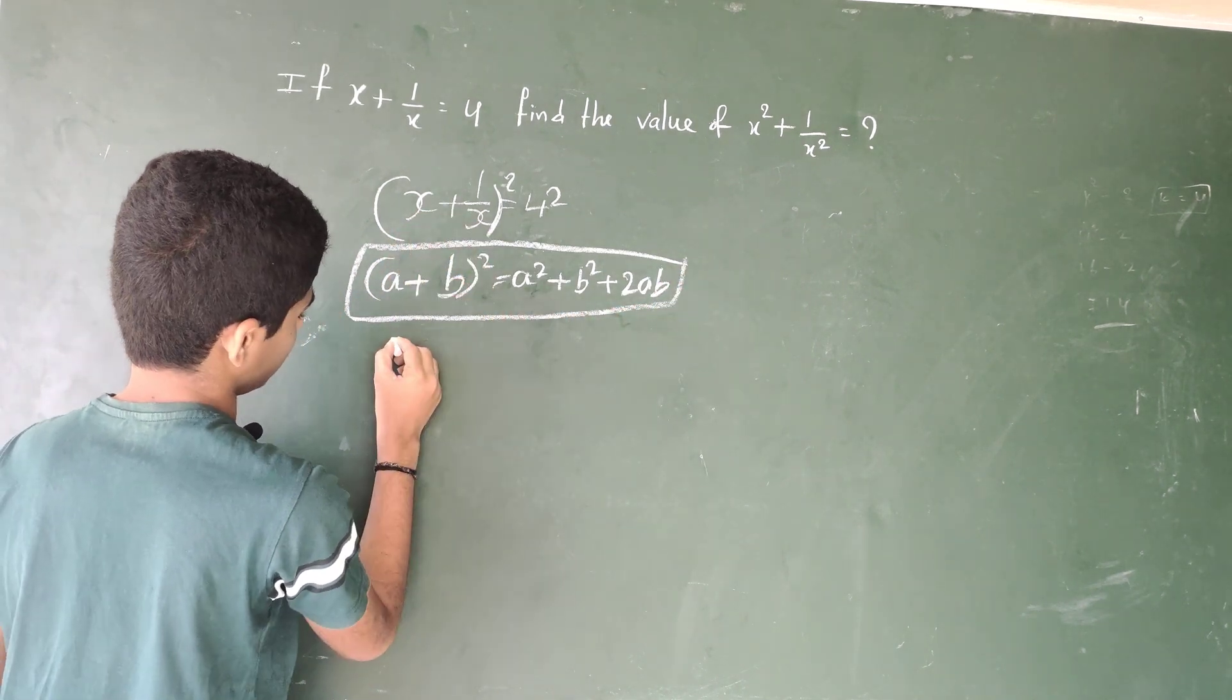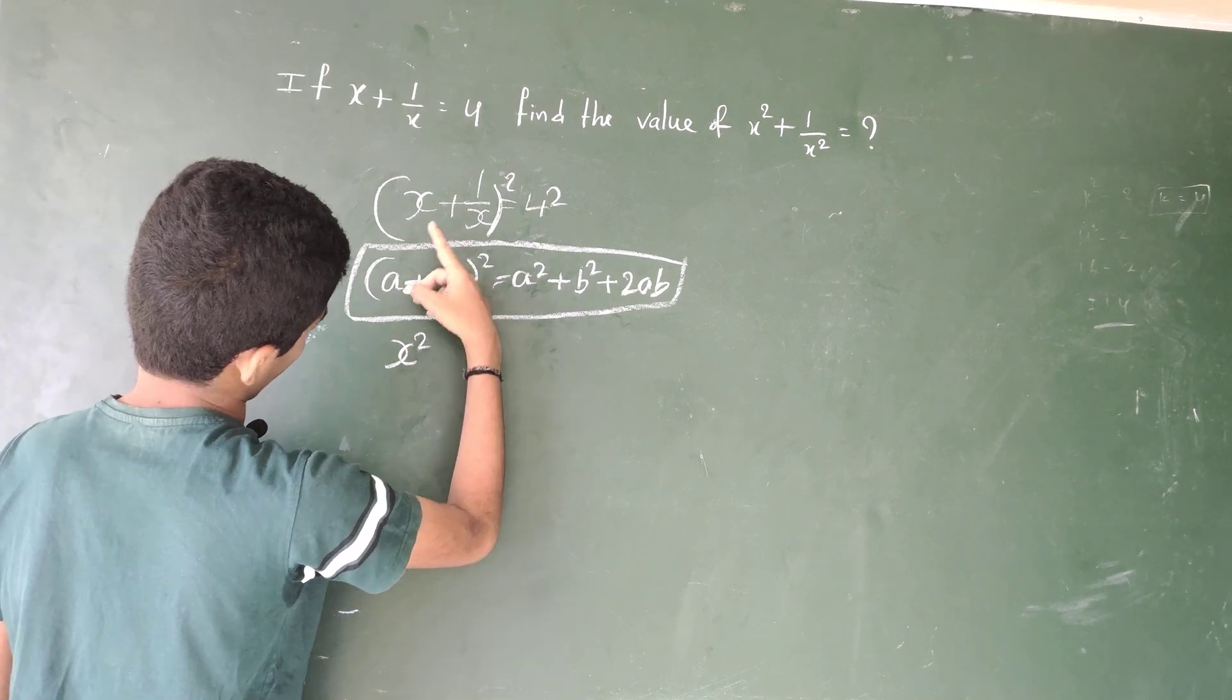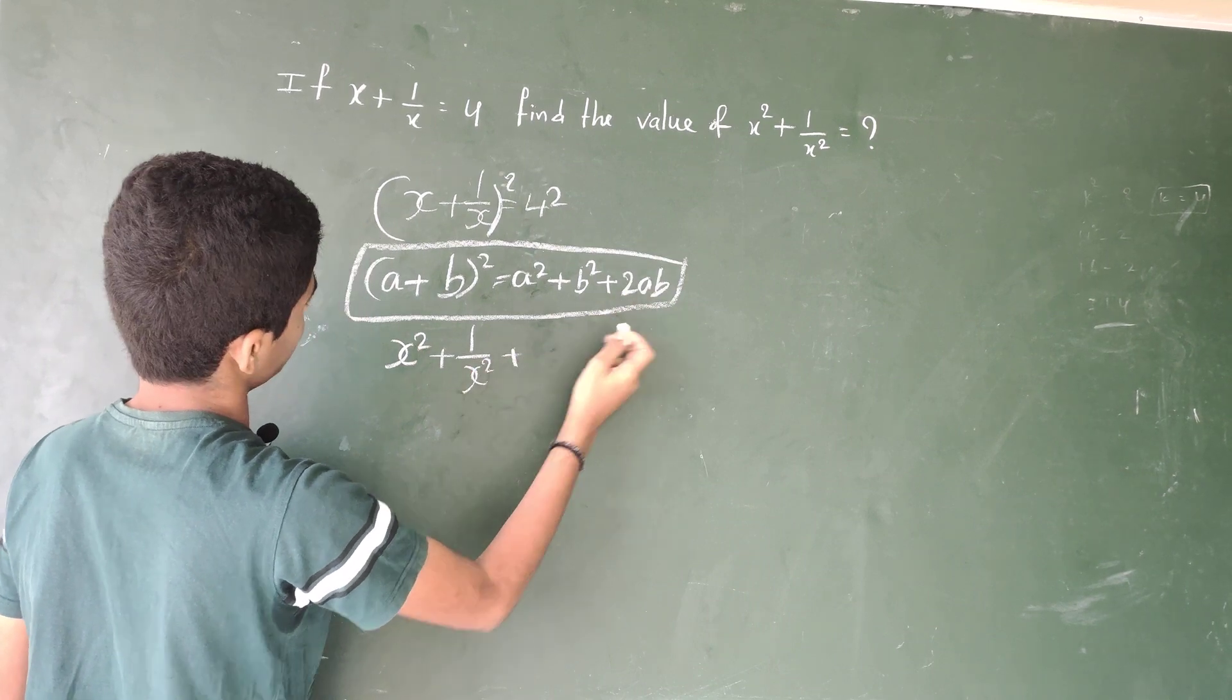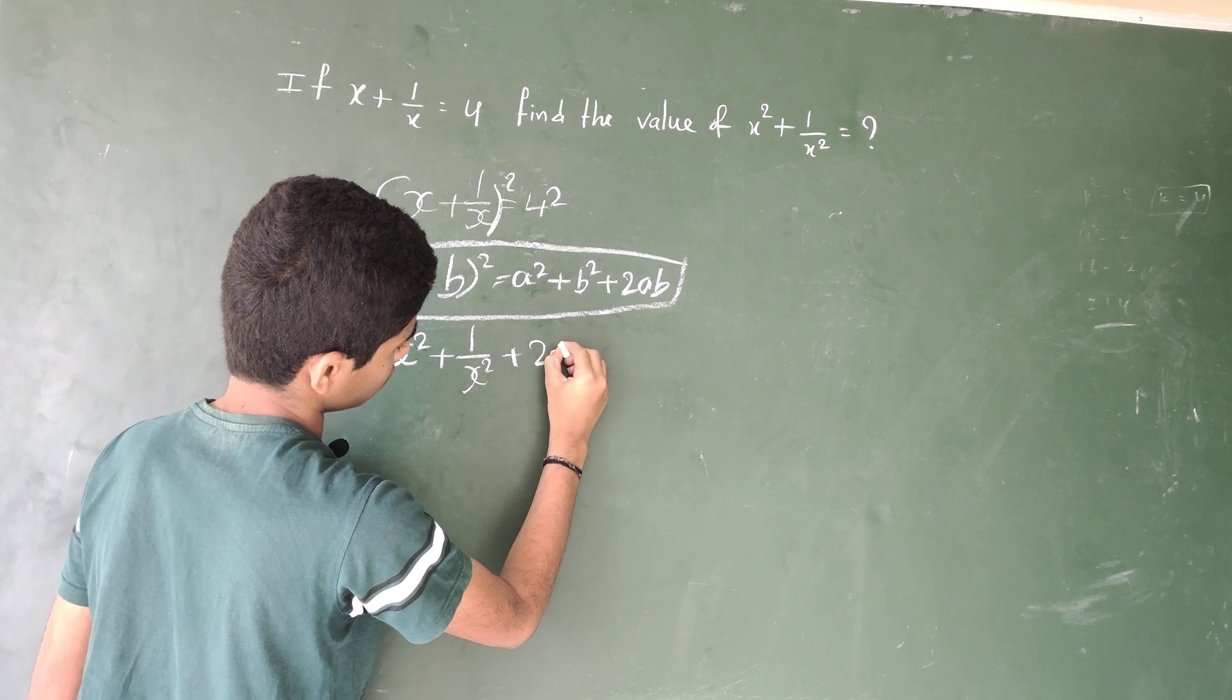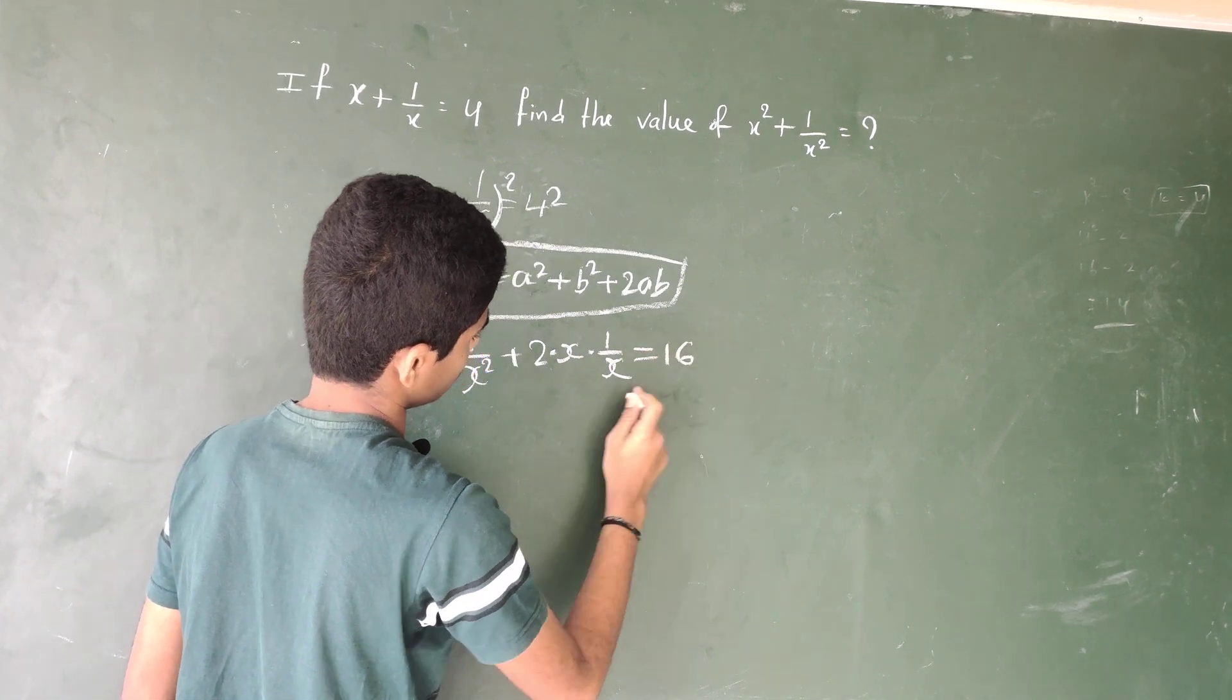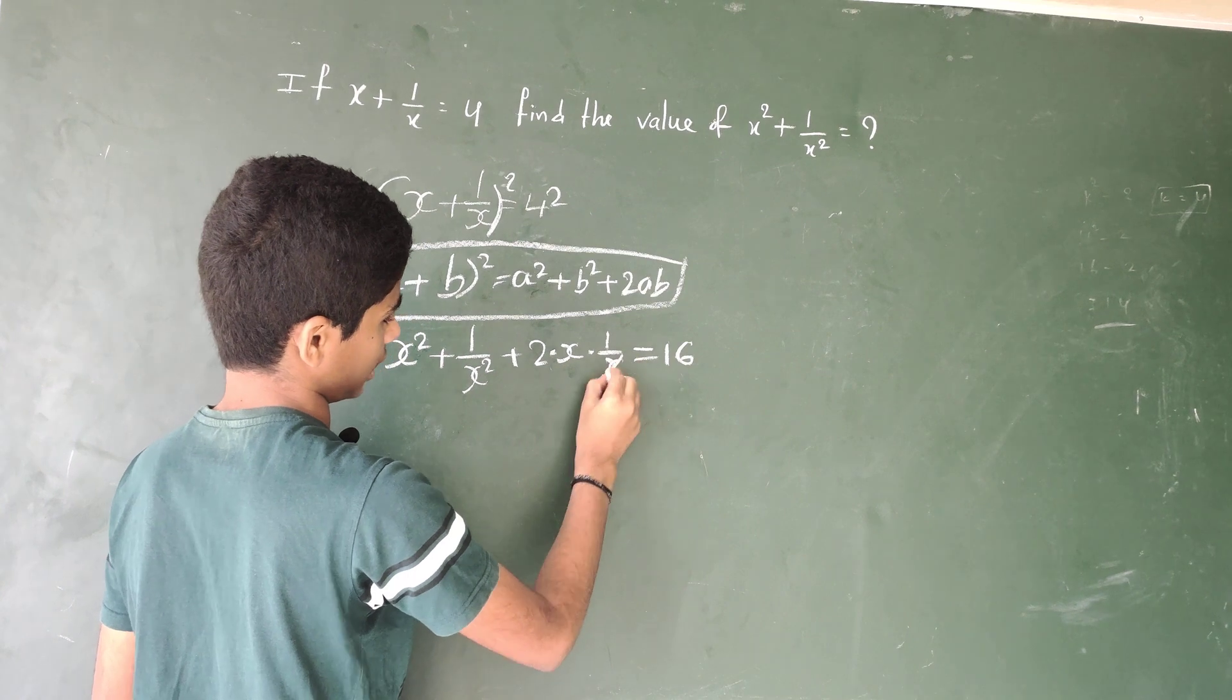A is x square, b is 1 by x, so 1 by x square plus 2ab. 2 into a, x, into 1 by x equal to 16. Here, in the numerator the x and in the denominator the x cancels.